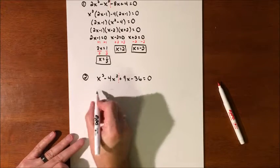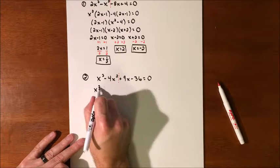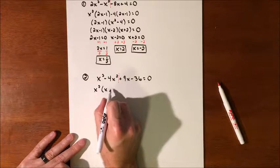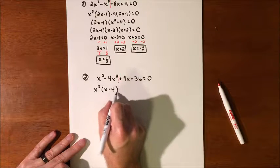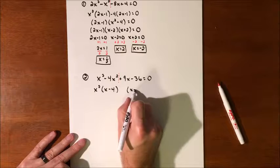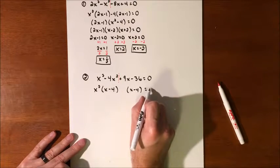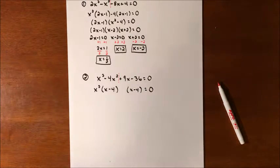So what do they have in common? They both have an x squared we can factor out. That'll leave us with an x minus 4. So we need to get an x minus 4 out of the next group in order to be able to factor by grouping.